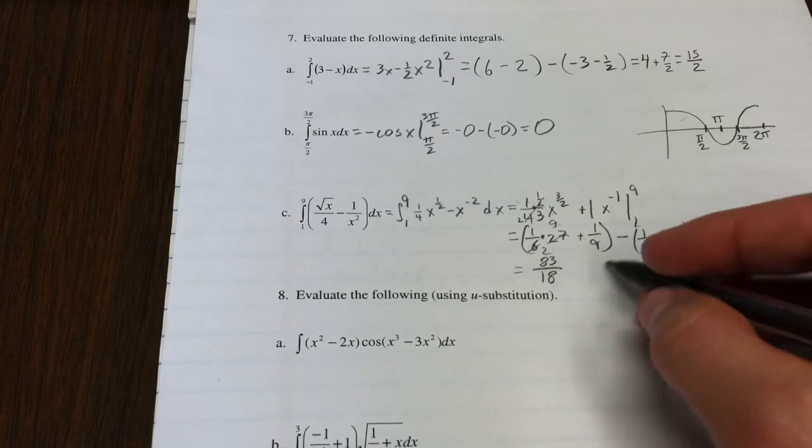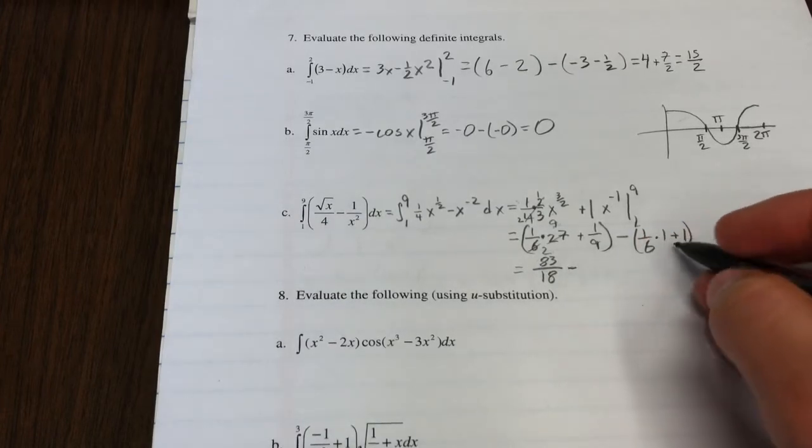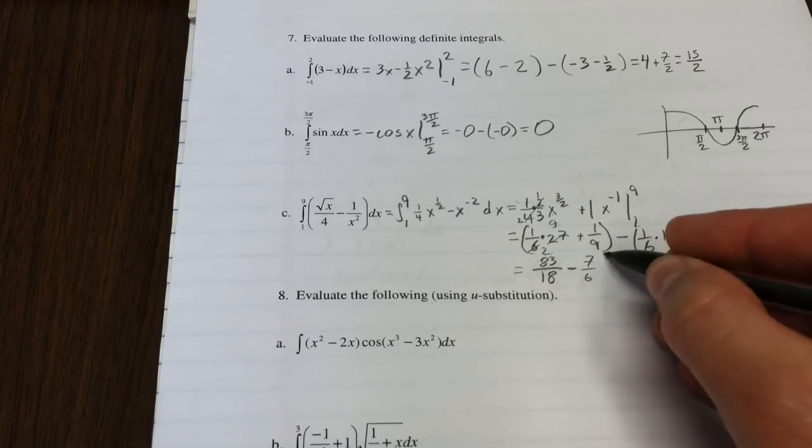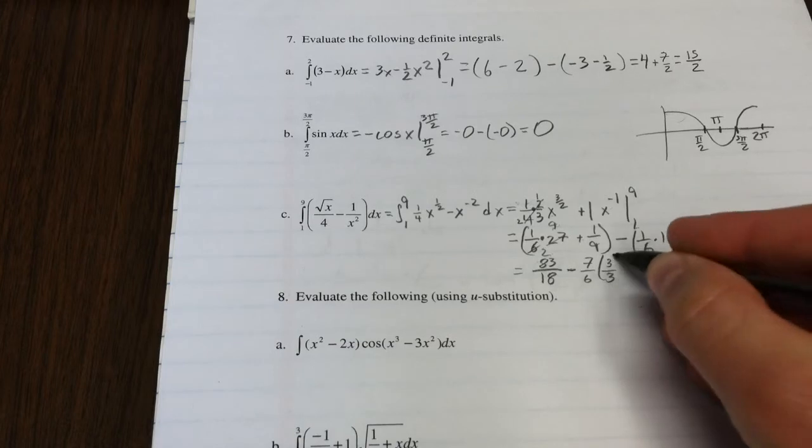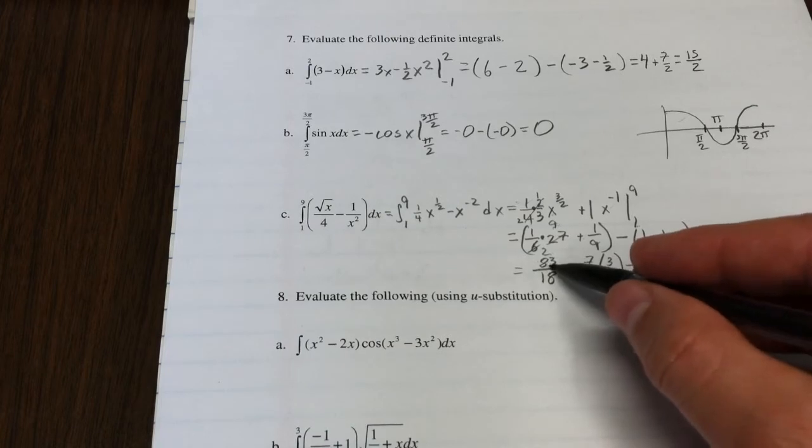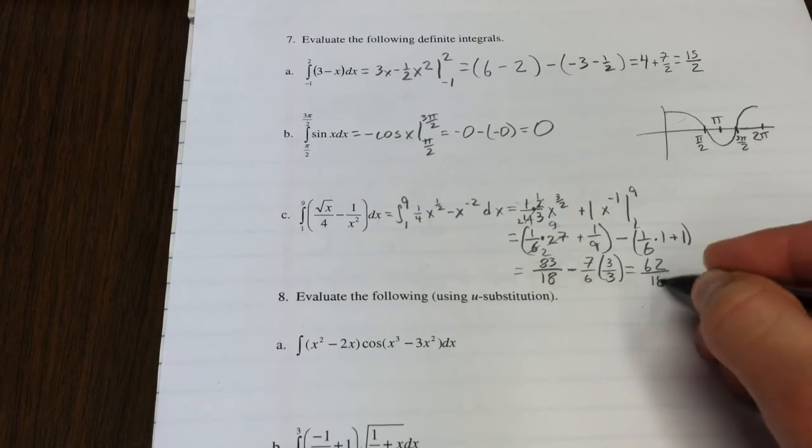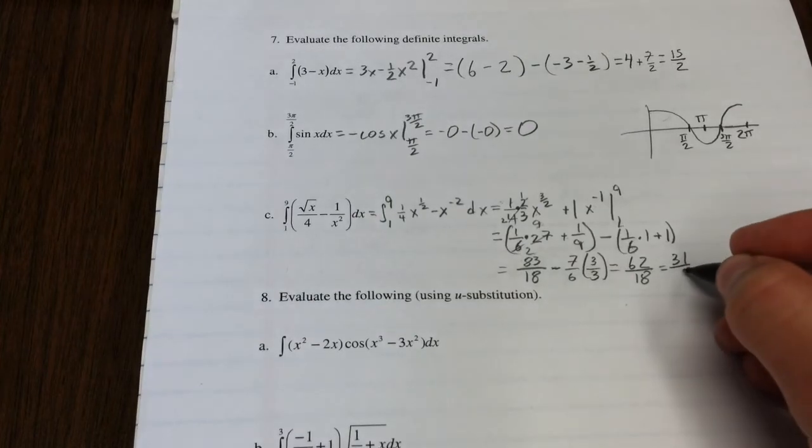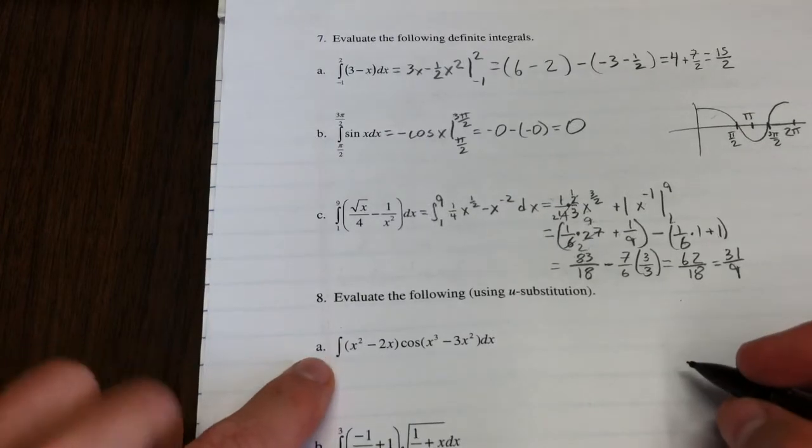Now over here, we have 7 sixths, I suppose. And that would be something like 21 18ths. So if we subtract 21 from 83, that's 62 18ths. Those both have a factor of 2 in them. So that's 31 ninths. How about that? What do we think of them apples?